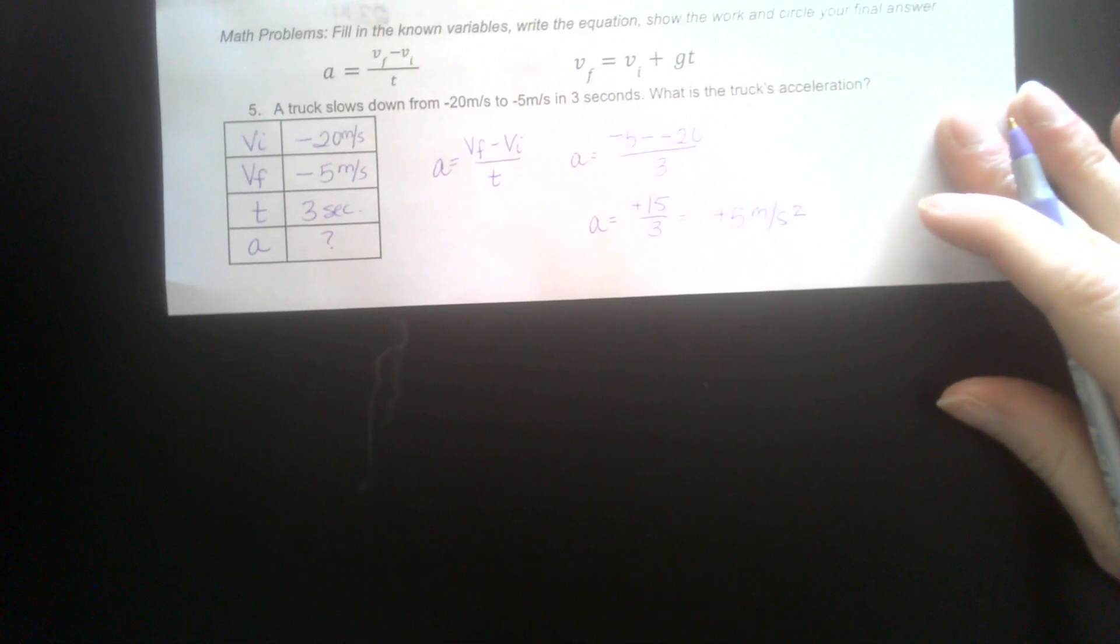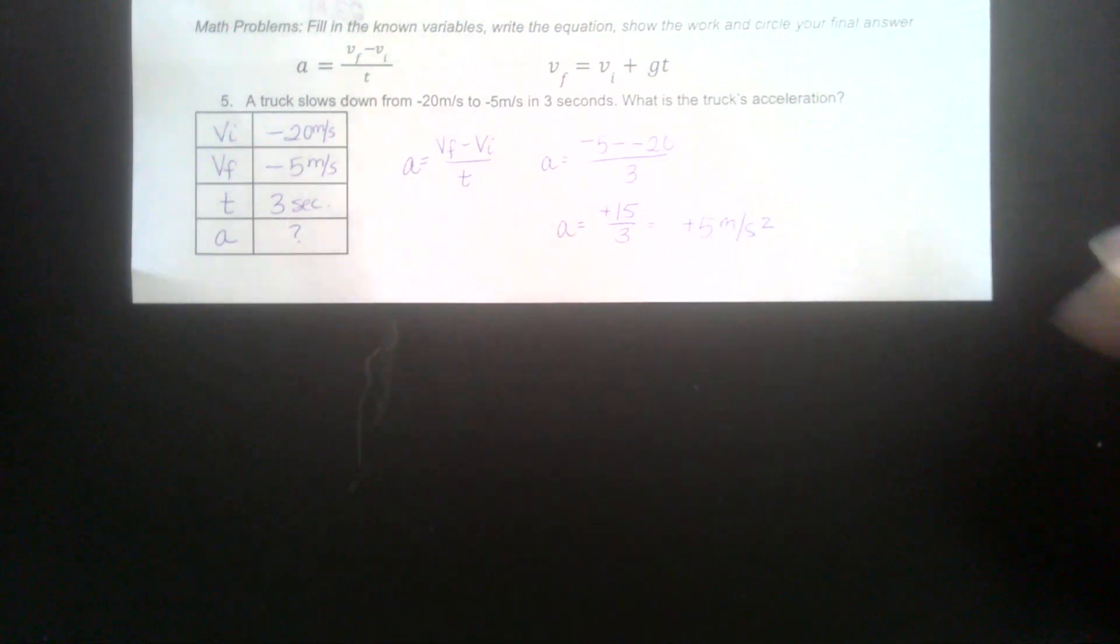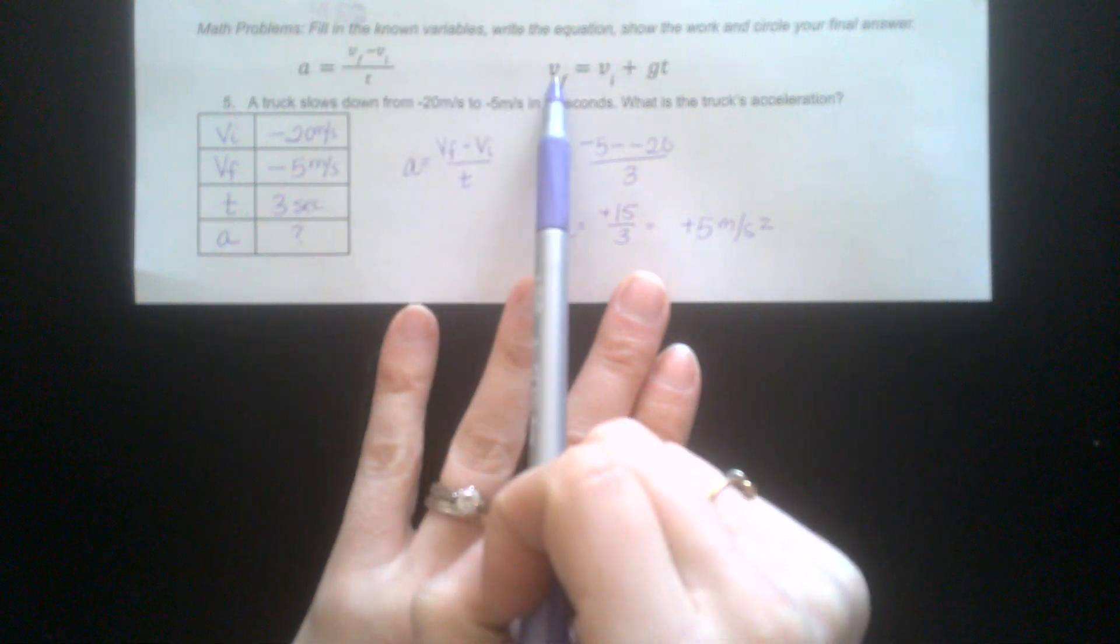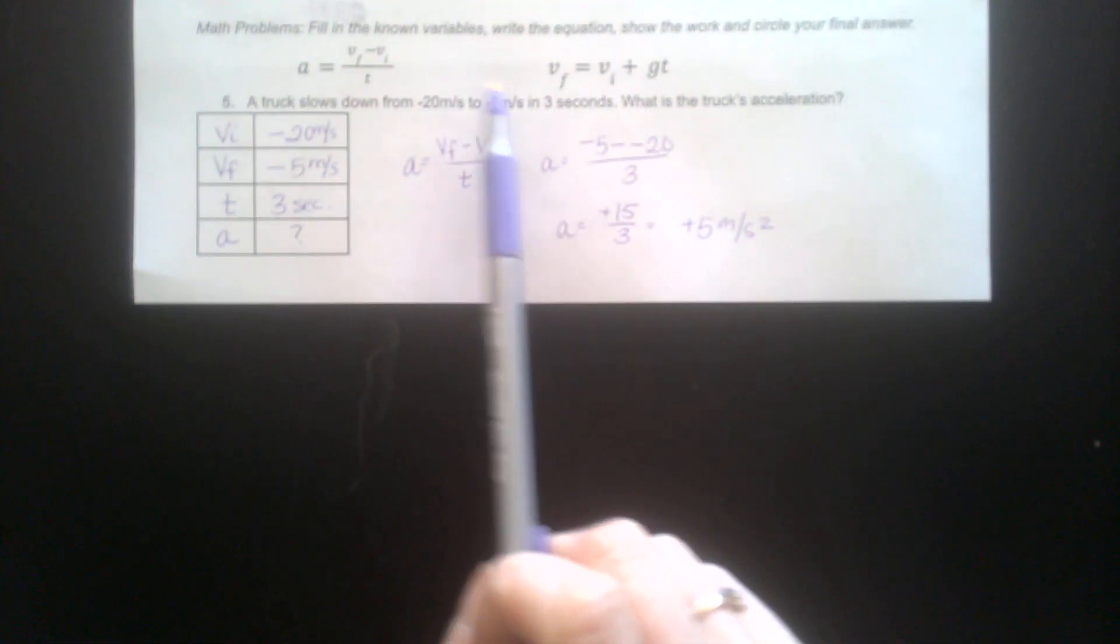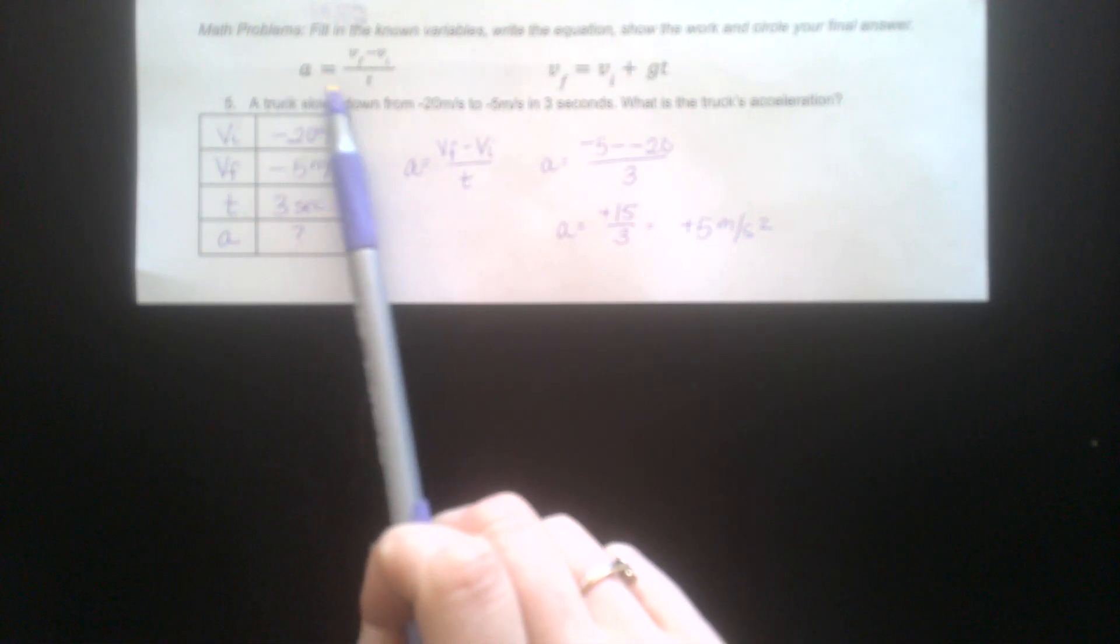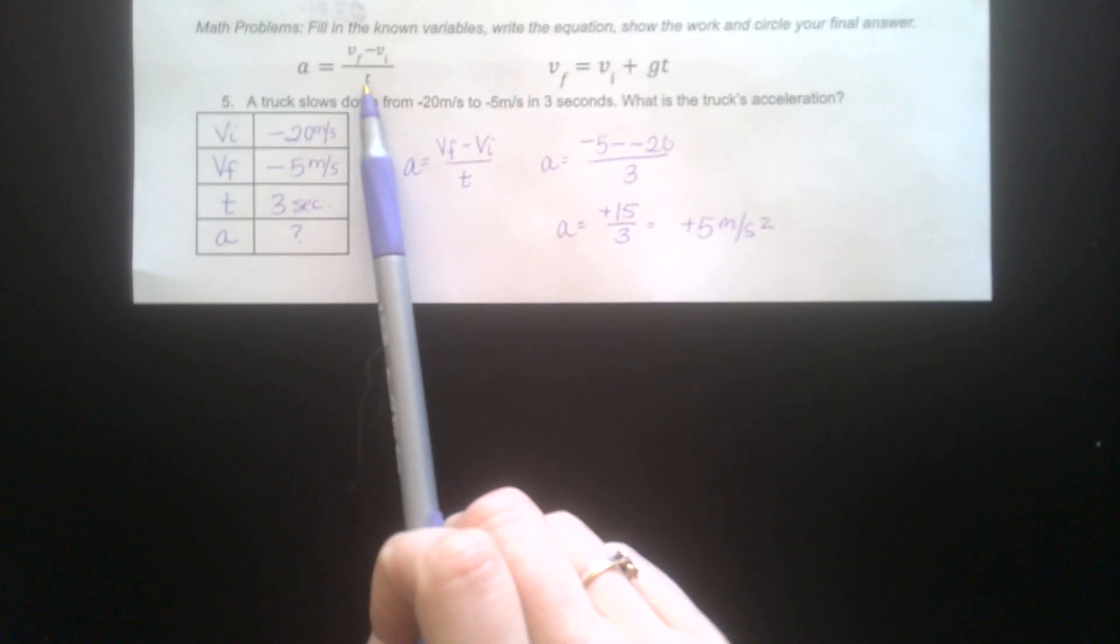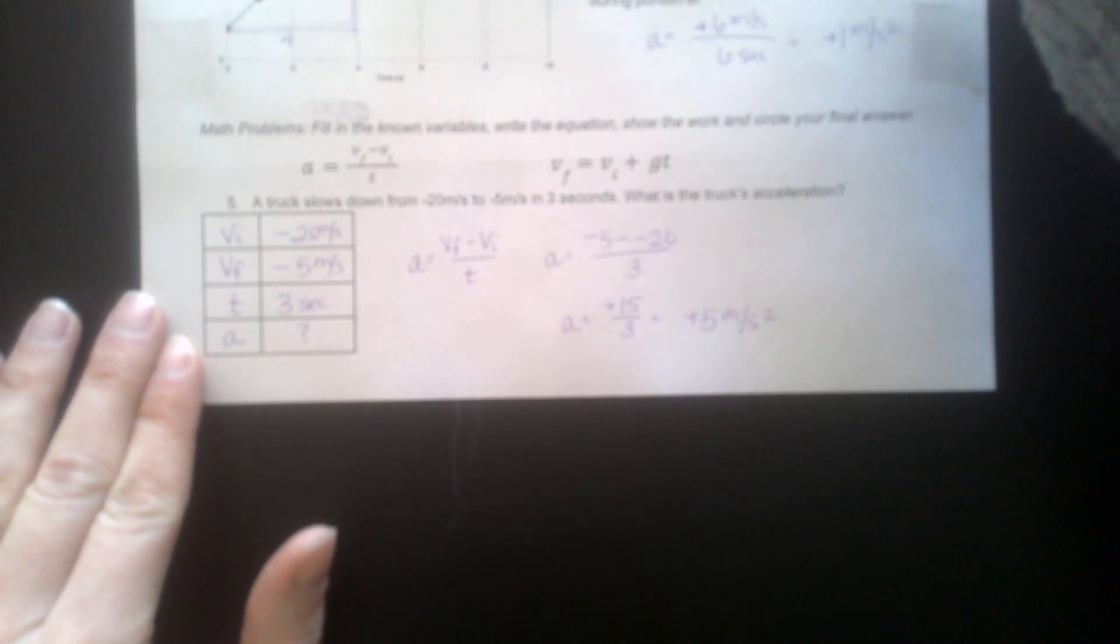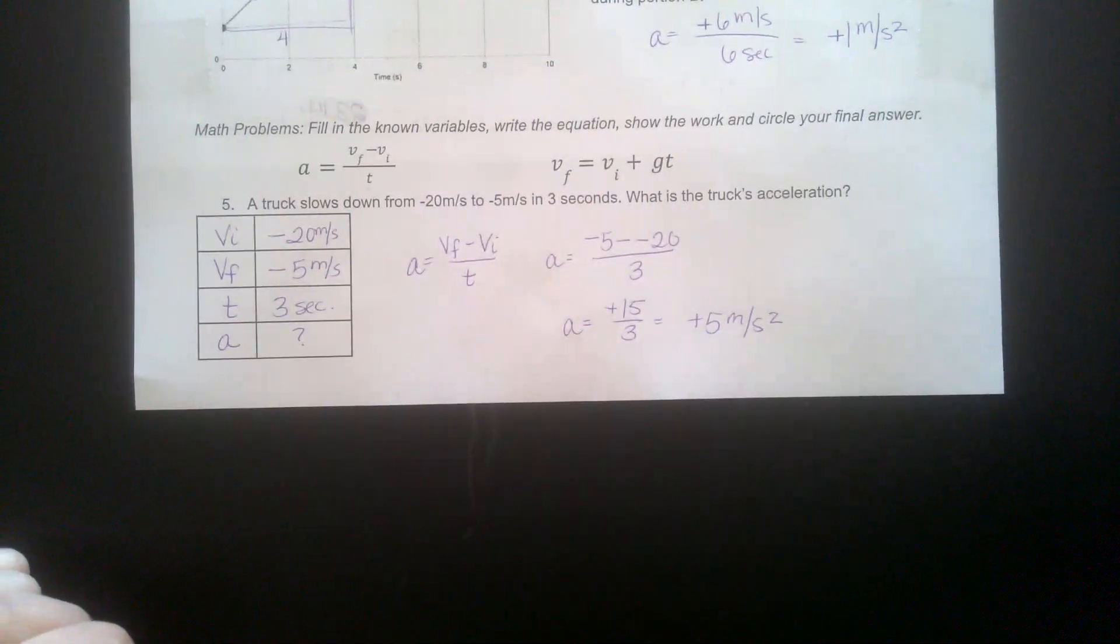Number 5. The equations are given to you here. These are the two equations we've used for acceleration. The first one is just your normal acceleration equation for things moving horizontally on the road or on a flat surface.